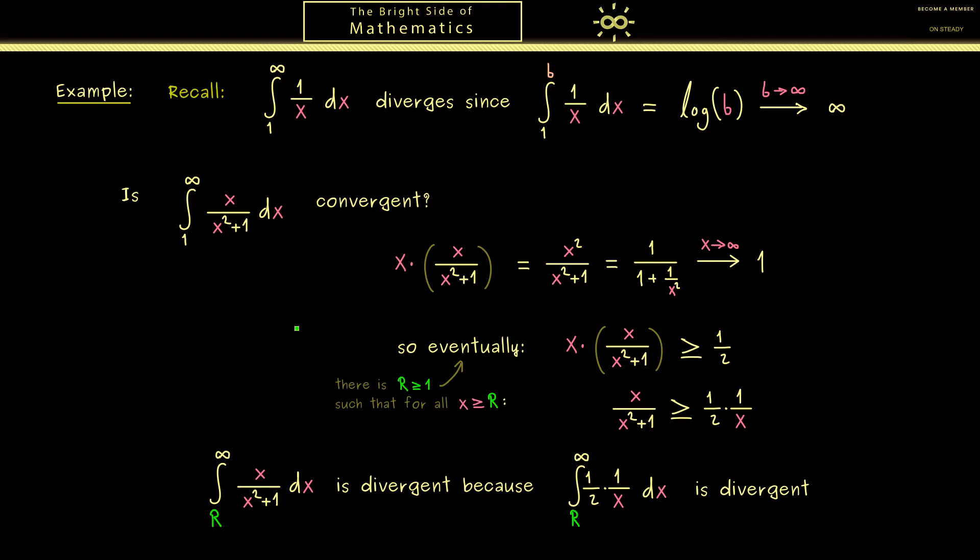This is clear when you see that the difference between both integrals here can only be a finite number. Simply because it's the ordinary Riemann integral from 1 to R, which is as you know well-defined and finite. Therefore, in summary, this integral is convergent if and only if this integral is convergent. And with this we are finished, we have answered this question here.